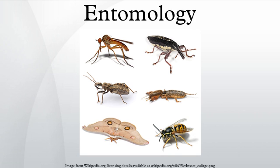At some 1.3 million described species, insects account for more than two-thirds of all known organisms, date back some 400 million years, and have many kinds of interactions with humans and other forms of life on Earth.